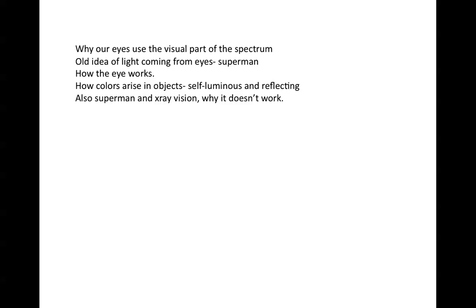Most of the objects we see are not self-luminous. For example, when you look at your neighbor and they have a blue shirt on, the lights in the room are emitting white light. White light is the sum of all the colors in the spectrum. But the blue shirt is absorbing the red photons and only reflecting the blue ones, and so the shirt looks blue to you. If someone had a red shirt on, then it would be absorbing the blue photons, reflecting the red ones, and it would look red to you.